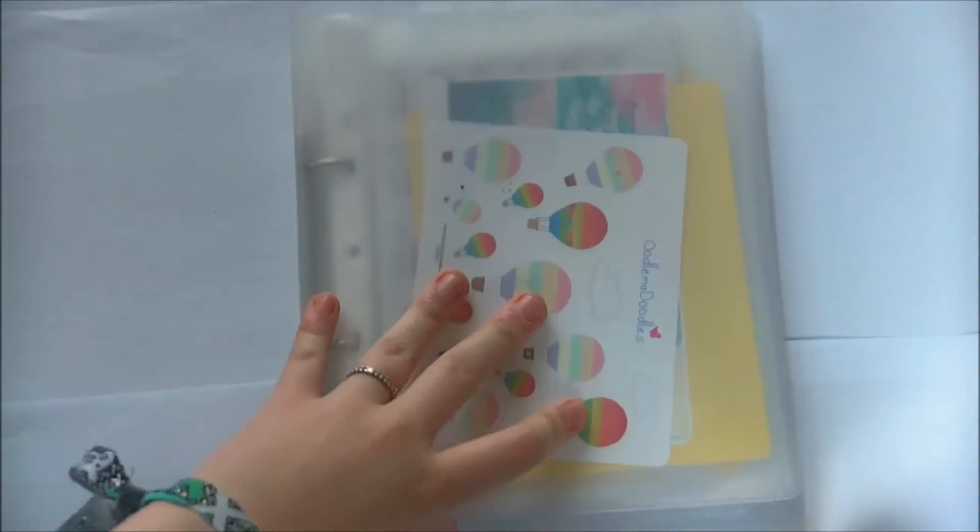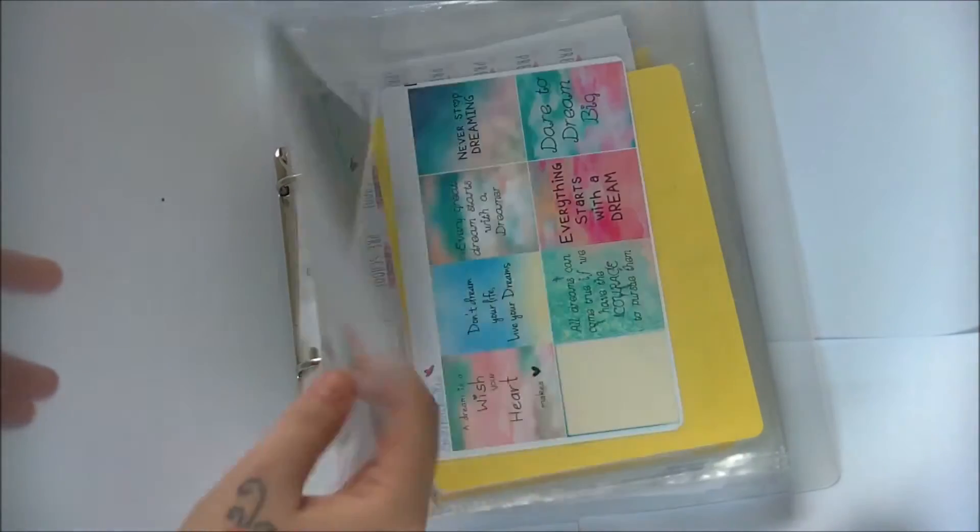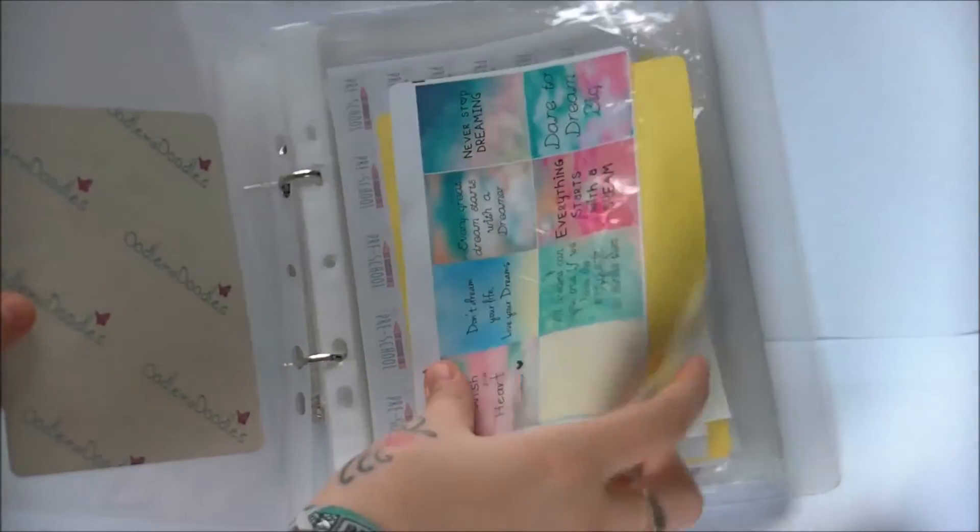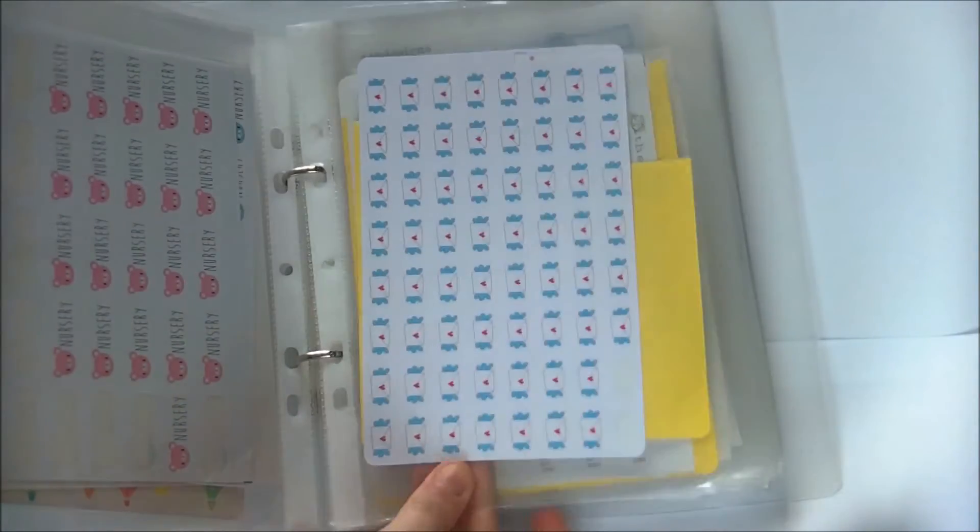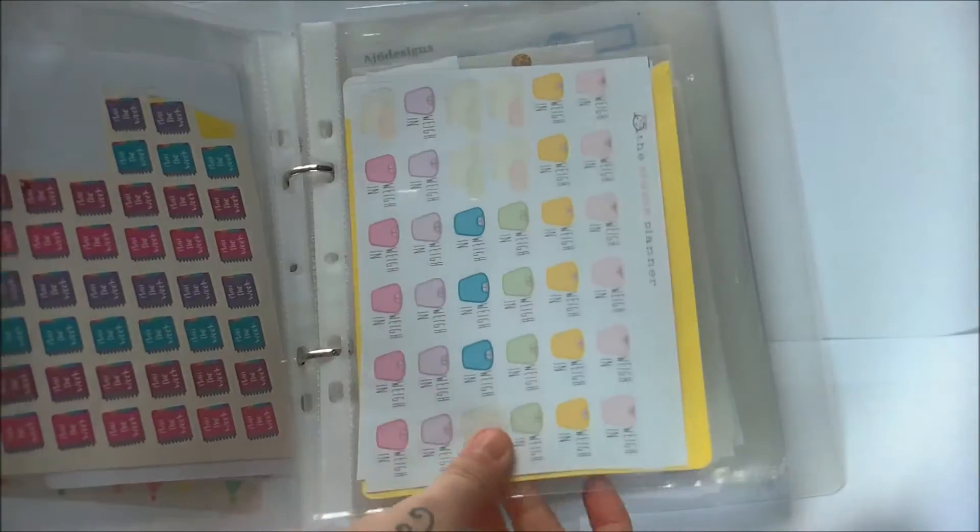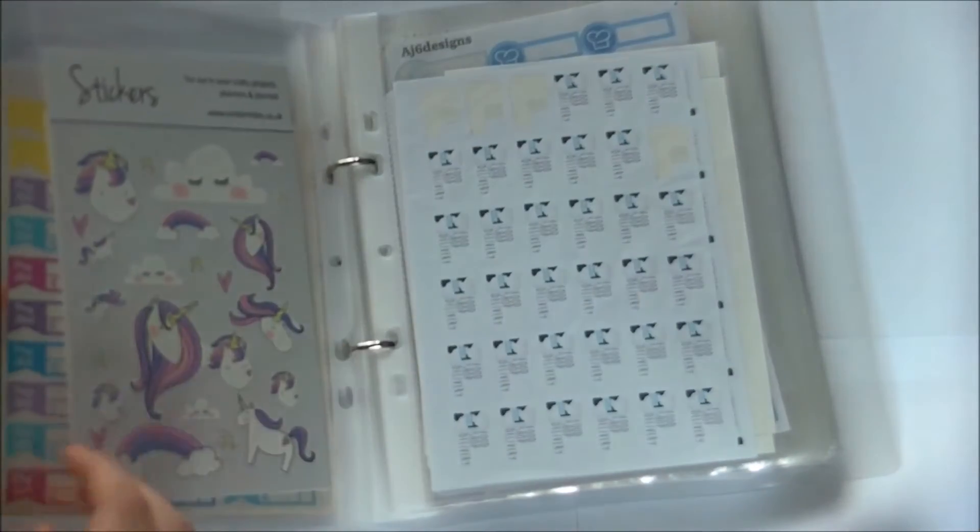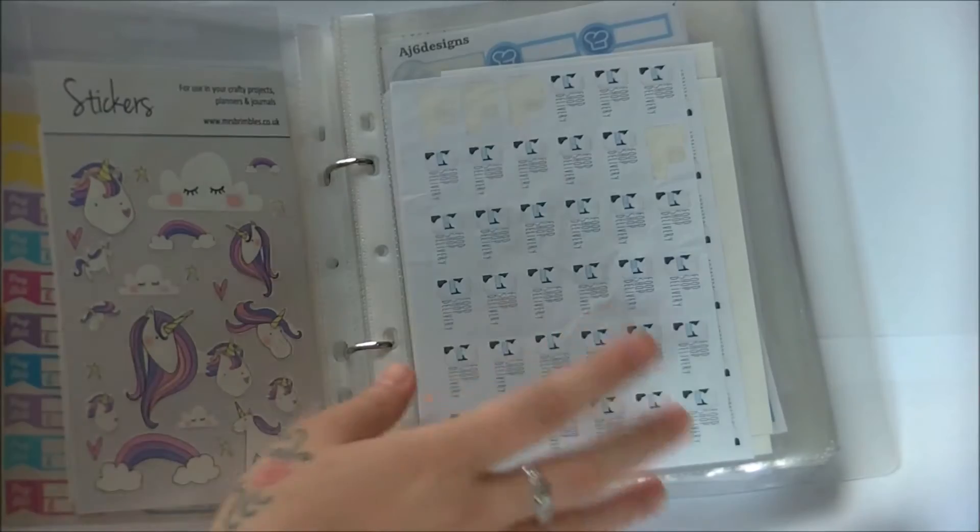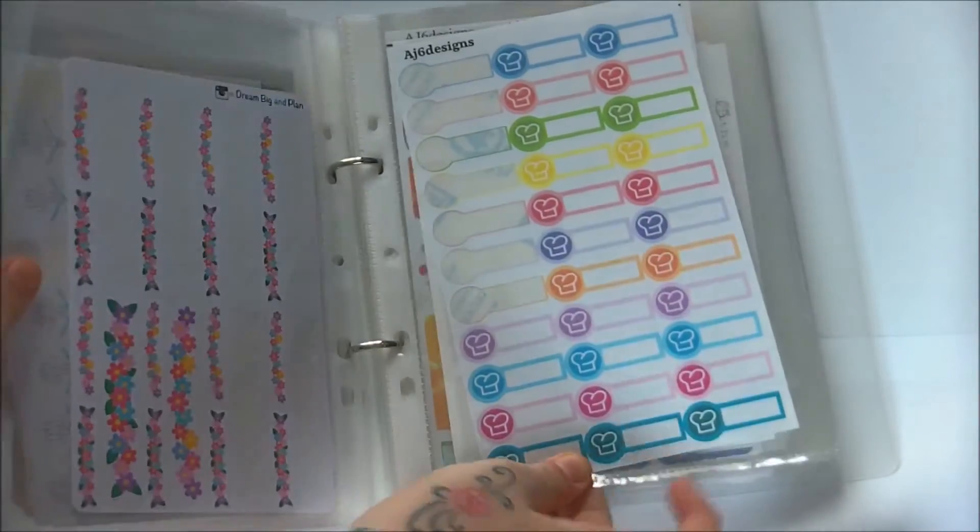In this one here I have all my functional stickers at the front. I have the Plump Planner and Organized Panda, different ones like that, some Carpe Diem ones, some stickers from Miss Brimble's page, all that kind of stuff, AJ6 Designs ones.